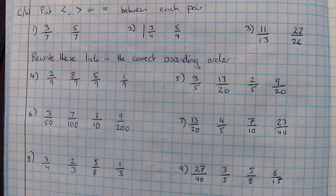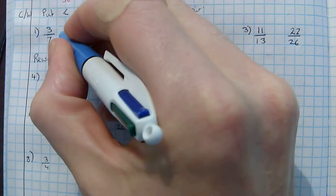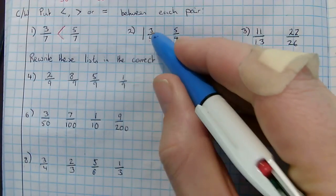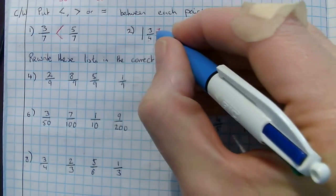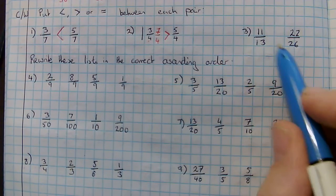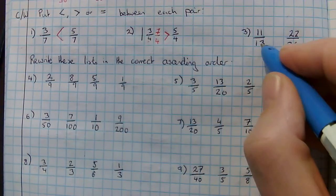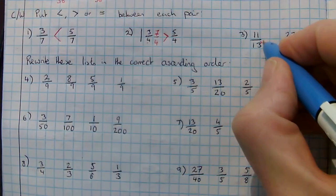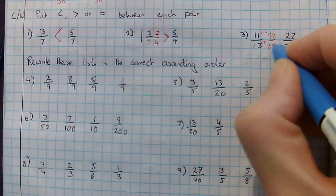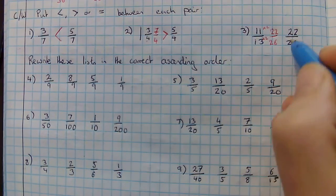Pause the video now and then see if you can attempt all those questions. Looking at the solutions: five is bigger than three, so five-sevenths is the bigger fraction. Here, if I do one and three-quarters, it gives me seven out of four. Seven out of four is bigger than five out of four. And here, if I change these to both out of twenty-six — I need to times that by two to give me twenty-six — so I need to times that by two, which would give me twenty-two out of twenty-six. We can say that those two fractions are equal.